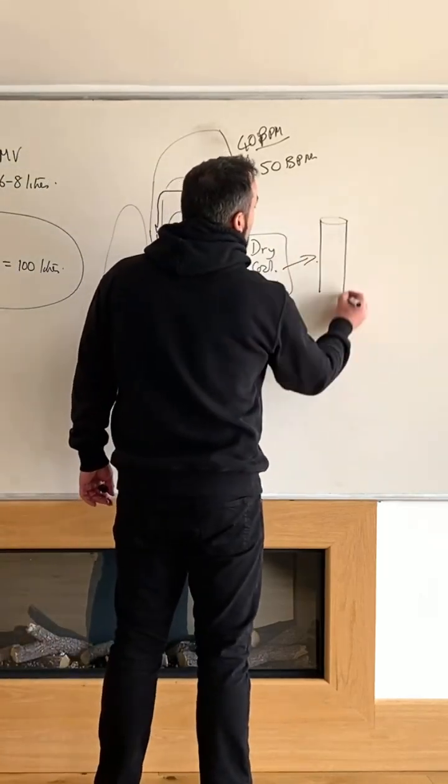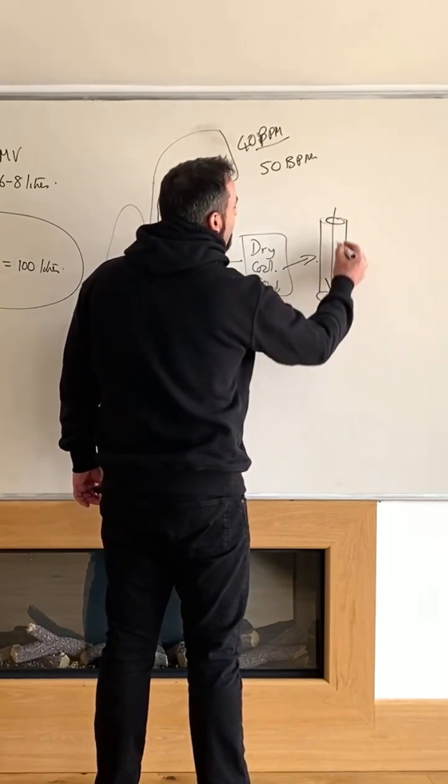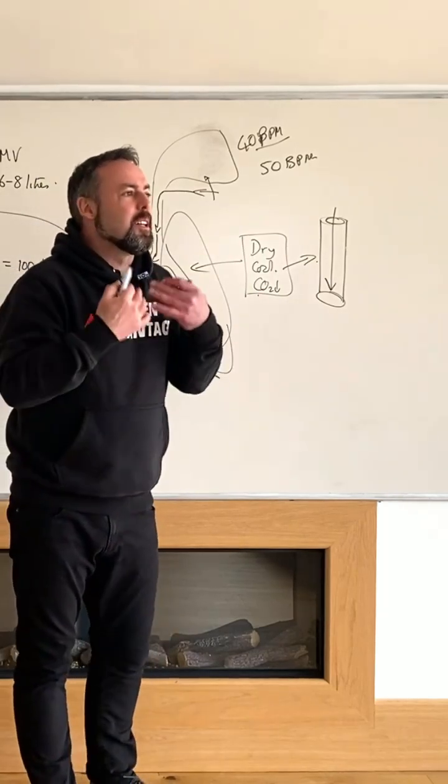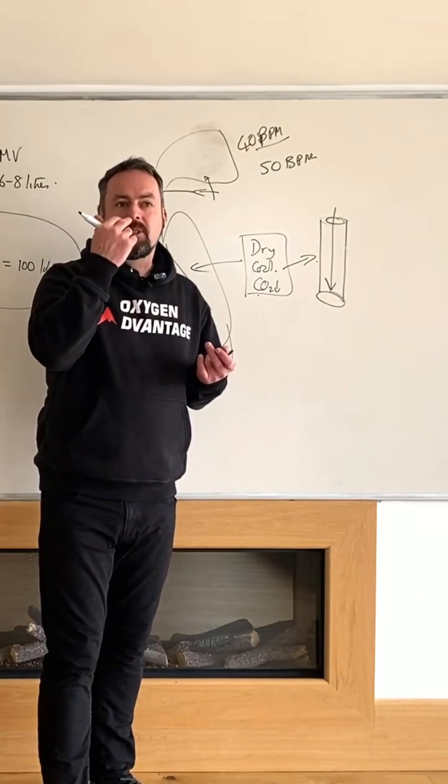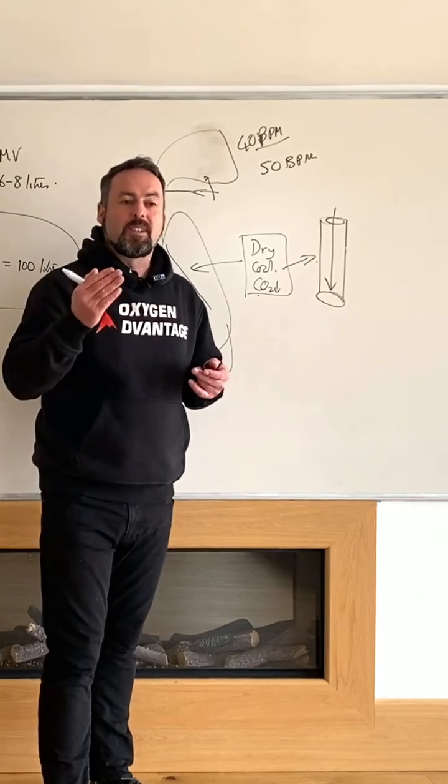A good airway might look like something like this, and it's very easy for air to move freely. That's what you want—you don't want any impediment to the air coming in. Ideally, it's through your nose, but most people breathe through their mouth, especially during physical exercise.